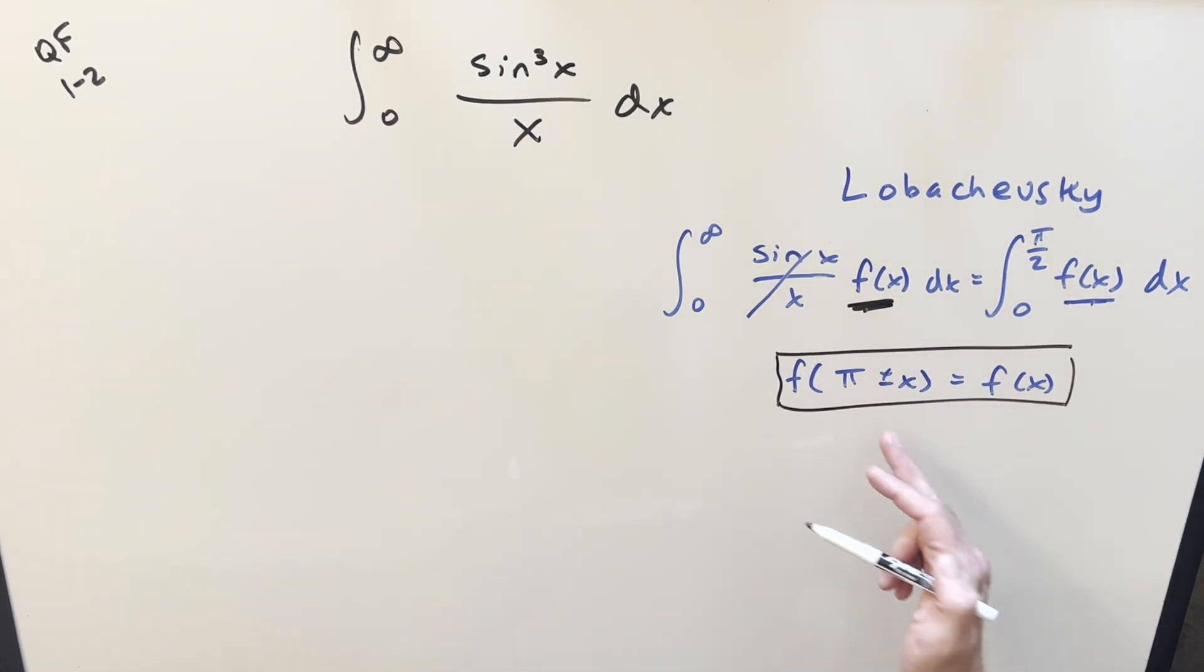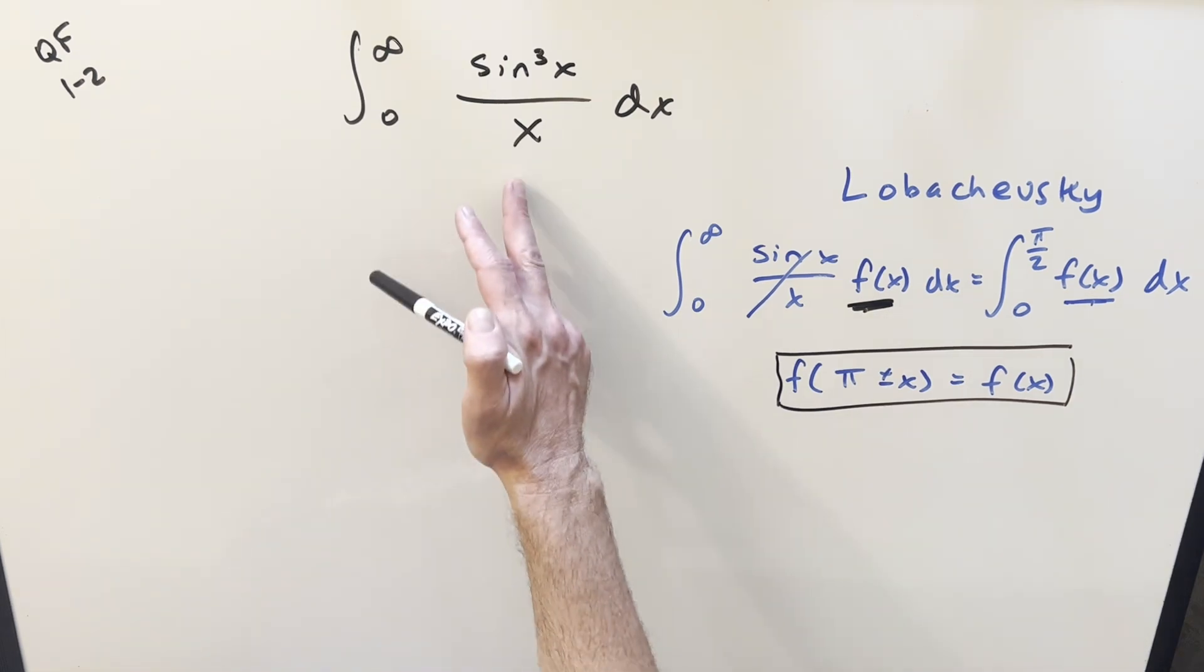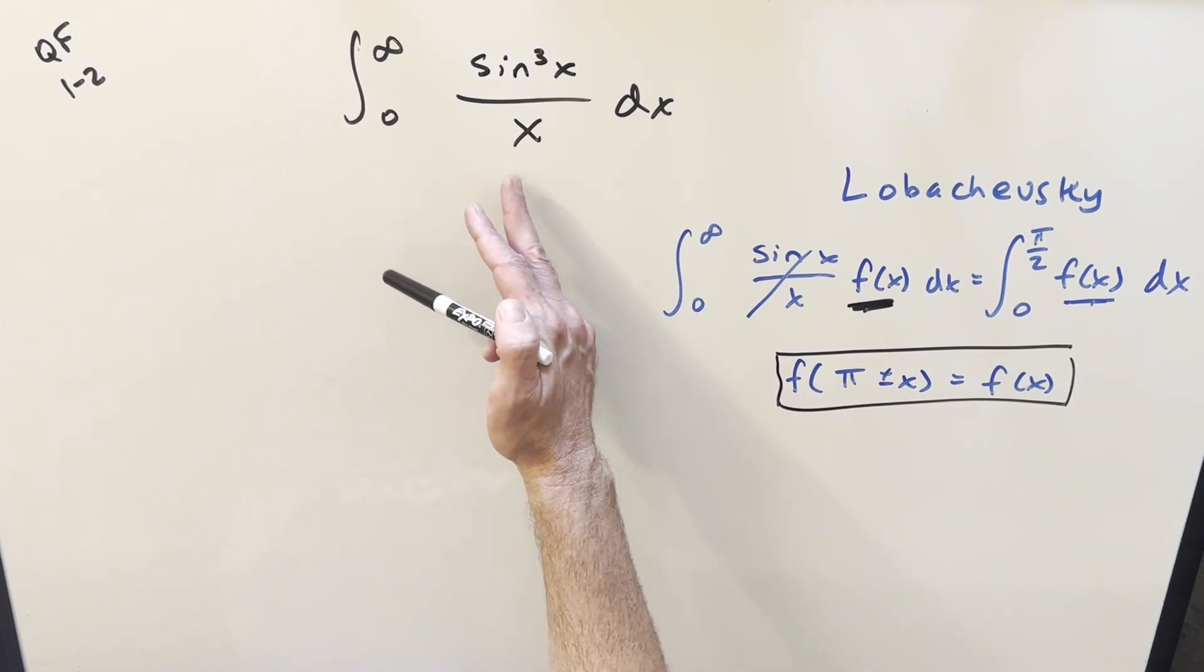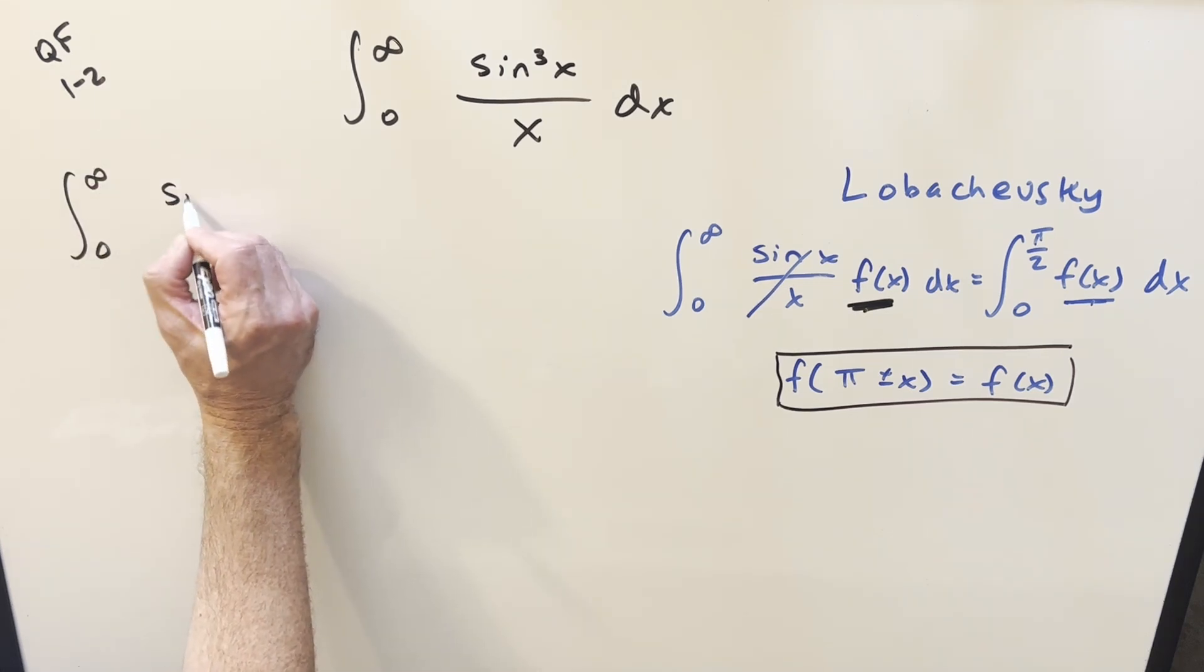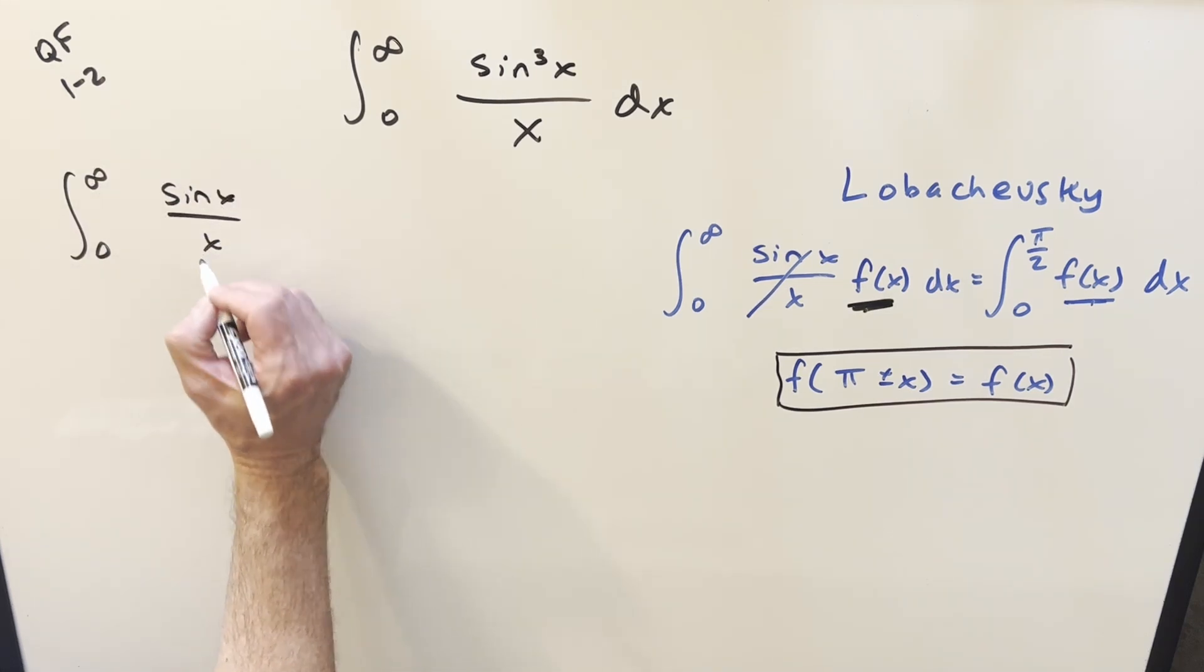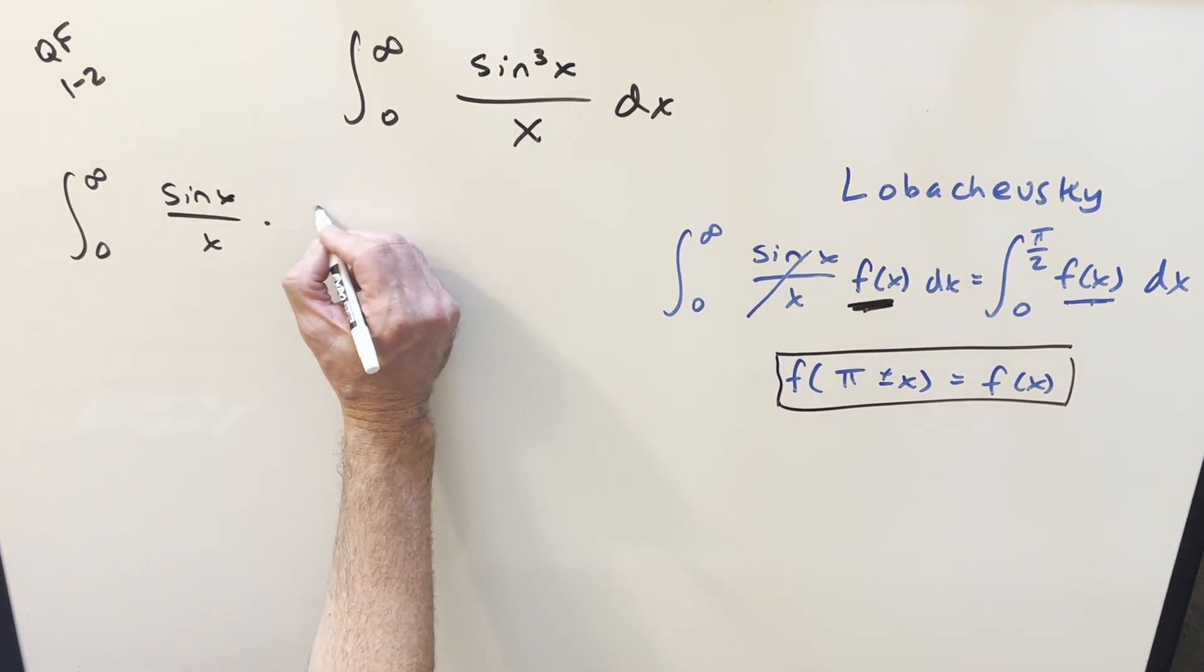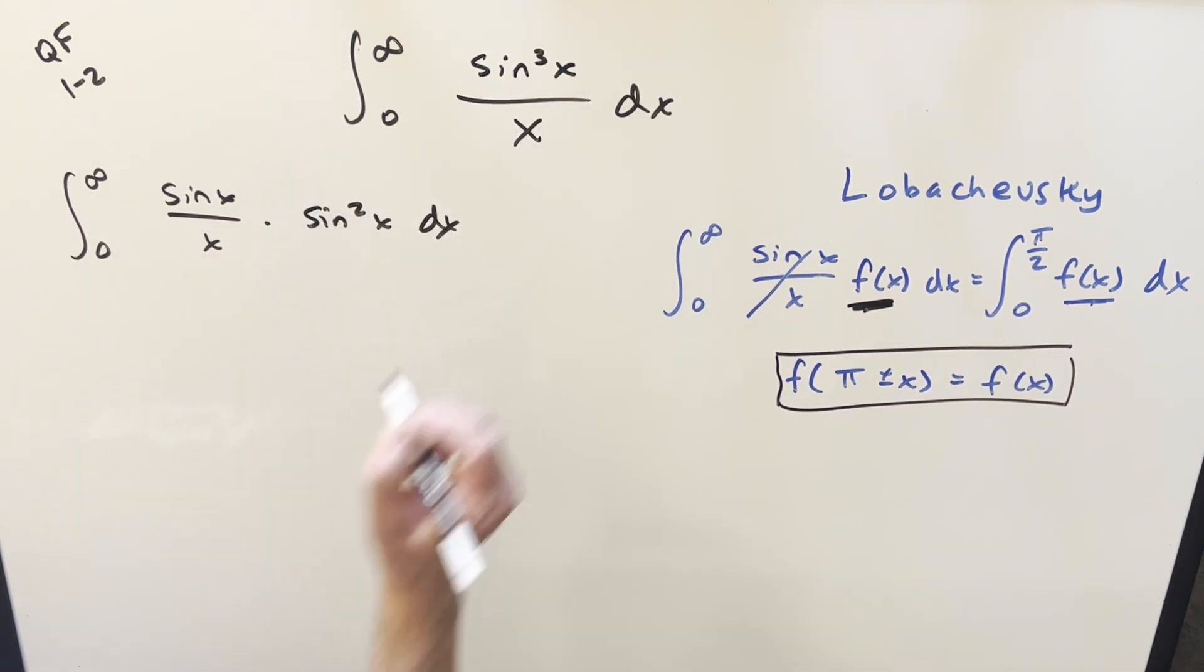We need our f of x to be something that satisfies this condition. This is going to imply that it's even and pi periodic, but before we get to this, we need to rearrange our integral because we're not quite in the right form. We need sine x over x, so all I'm going to do is just split up this numerator. So I'm going to rewrite it, put it in the form, so we're going to write it as sine x over x times just everything else, which is just going to be sine squared x dx.